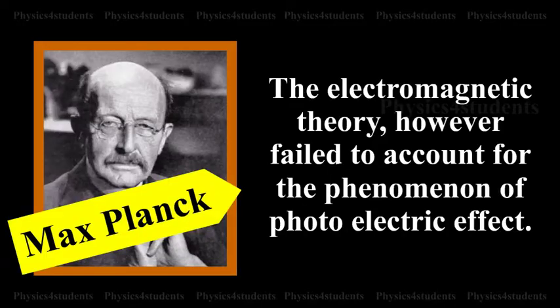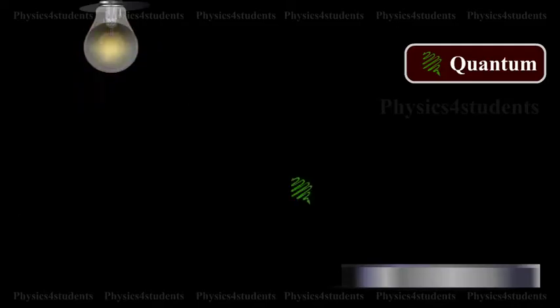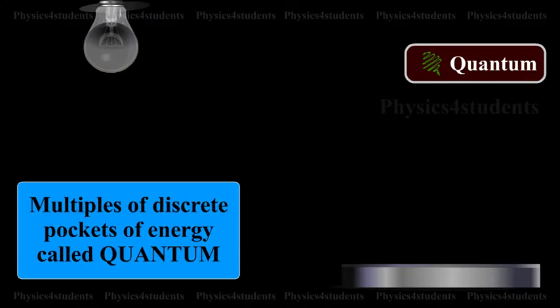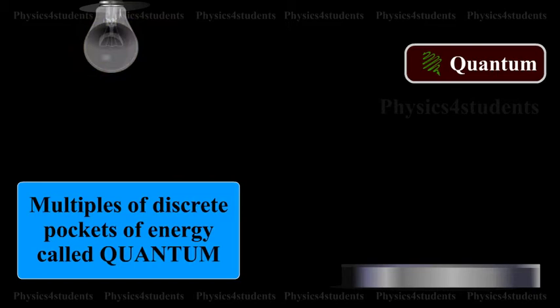The electromagnetic theory, however, failed to account for the phenomenon of photoelectric effect. In 1900, Planck had suggested that energy was emitted and absorbed, not continuously, but in multiples of discrete pockets of energy called quantum, which could not be subdivided into smaller parts.